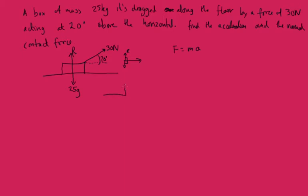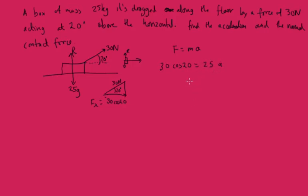We need to think about what force comes from the rope. Drawing a triangle: that's 20 degrees and this is 30 newtons. We want to find the component of the force parallel to the motion, which is 30 cos 20. So 30 cos 20 must equal the mass, which is 25, times the acceleration. Rearranging that, acceleration equals 1.13 meters per second squared.